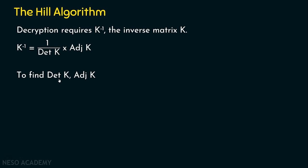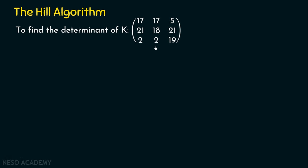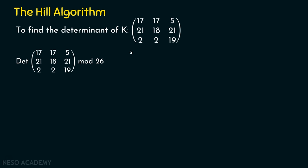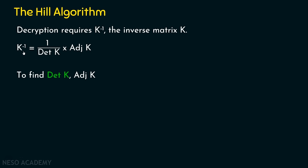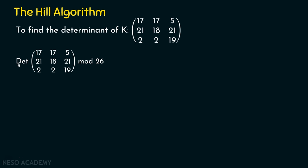Let's start by finding the determinant of K. We are using the same key matrix from the last presentation — if you are watching decryption directly, please watch the encryption presentation first. The key matrix K is: [17, 17, 5 / 21, 18, 21 / 2, 2, 19] — a 3×3 matrix. We are going to find the determinant of K mod 26, because the key inverse requires both the determinant and the adjoint.